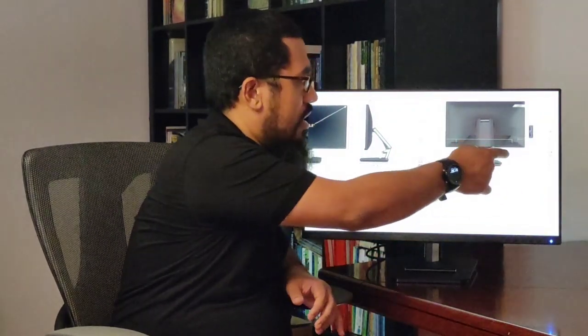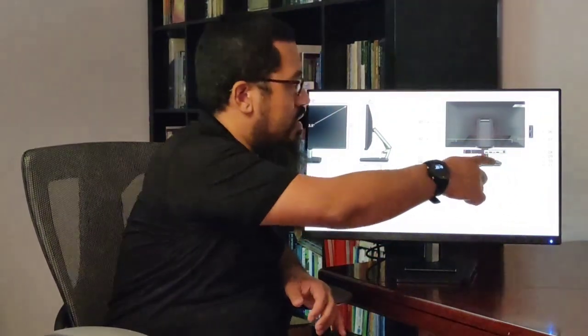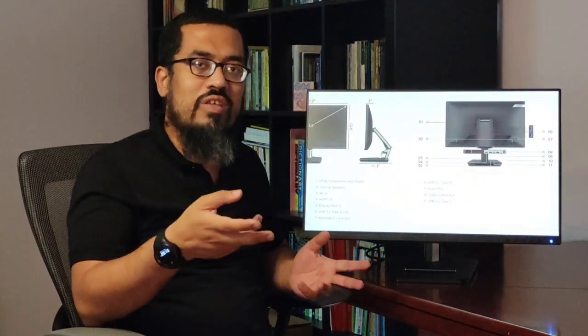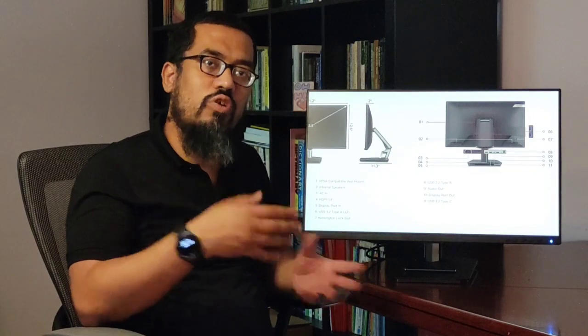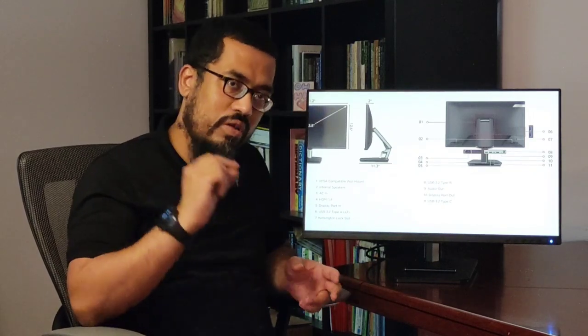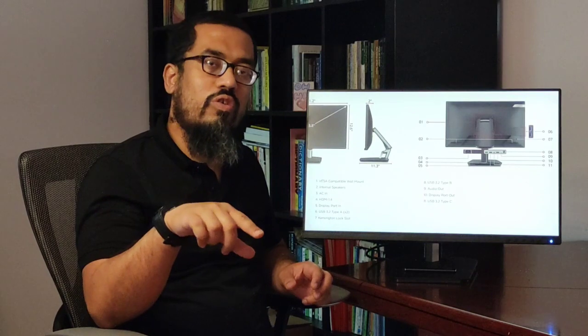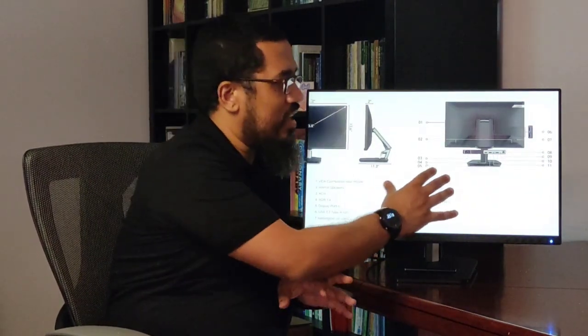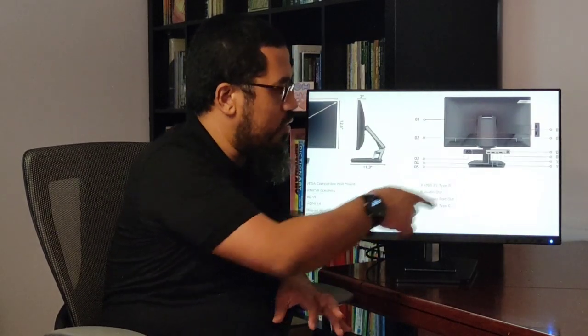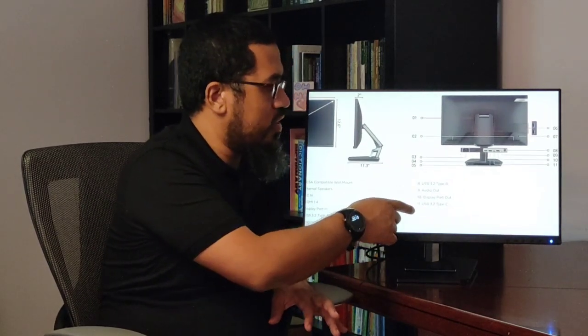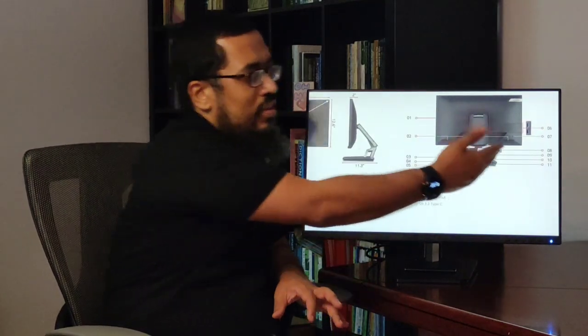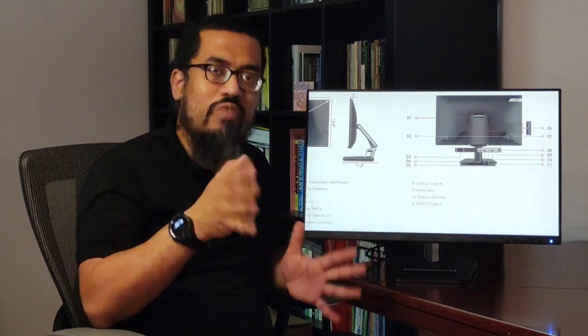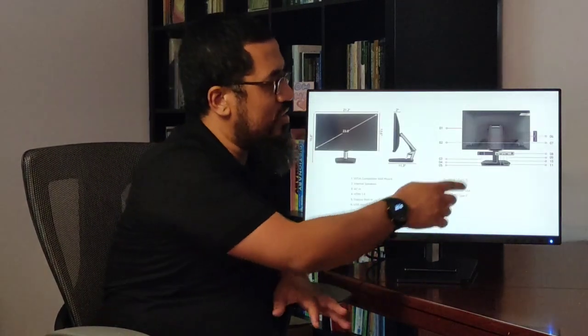You've got USB 3.2 type B, which is at the bottom here. This connects from your laptop, and this is what enables this monitor to become a touchscreen when you're using it with your laptop. Then you've got audio out, DisplayPort out, and USB 3.2 type C—these are the connectivity options you get with this monitor.